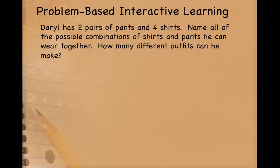Let's begin with a problem-based interactive learning. Daryl has two pairs of pants and four shirts. Name all of the possible combinations of shirts and pants he can wear together. How many different outfits can he make? Please pause the video and do this now.